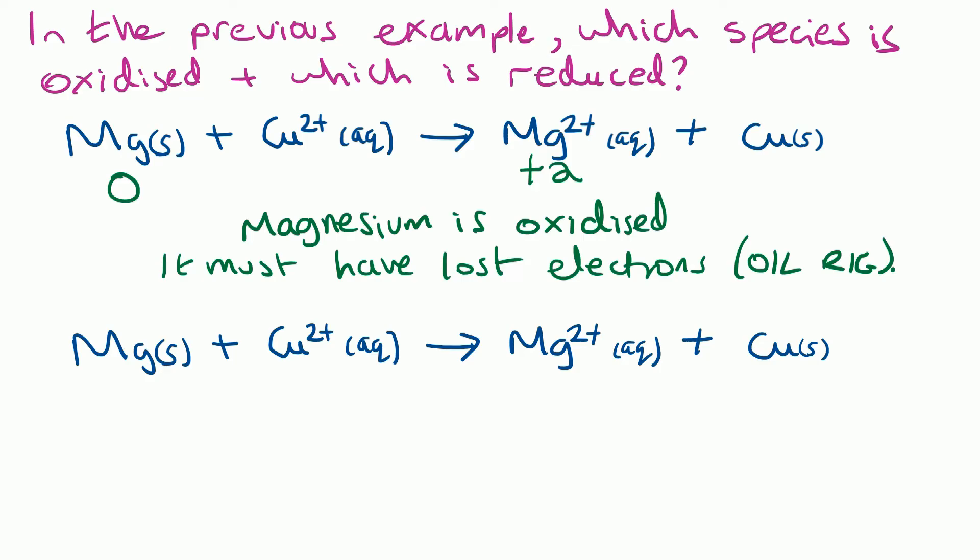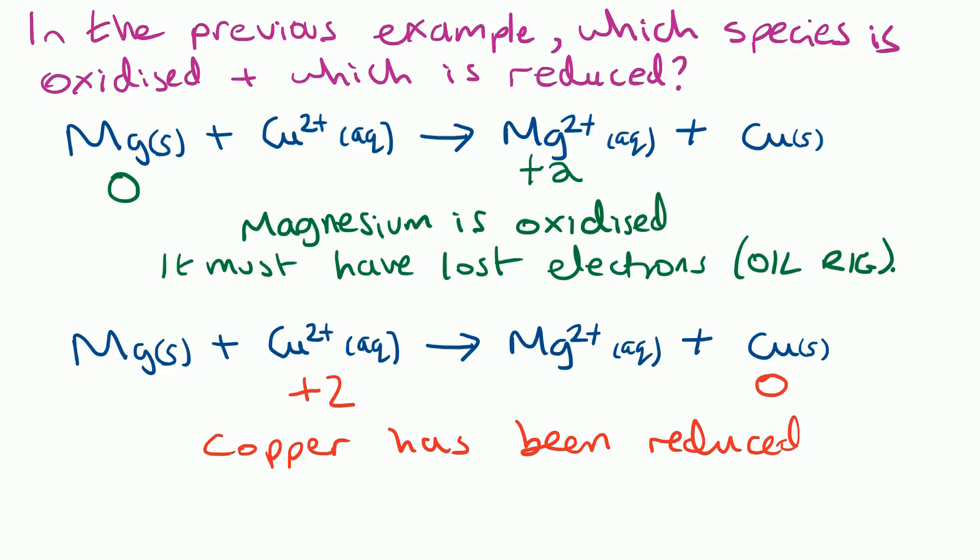Now looking at the other species, copper starts off with a +2 oxidation number and goes down to zero, so the number is decreasing — copper has been reduced. If the question asks what has happened to the electrons, remember OIL RIG: reduction is gain, so the copper ions must have gained electrons.